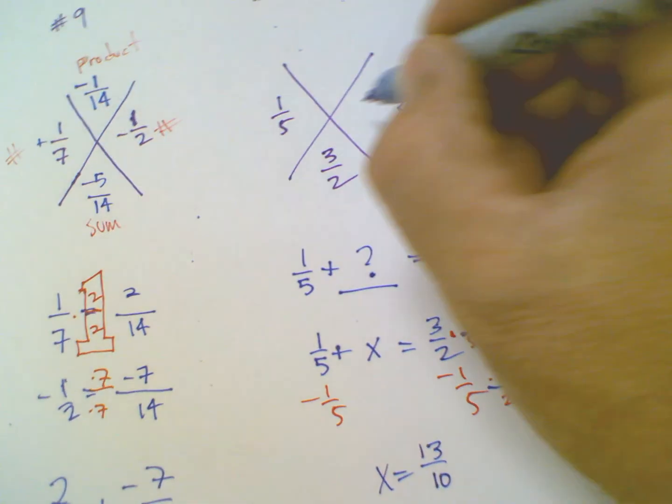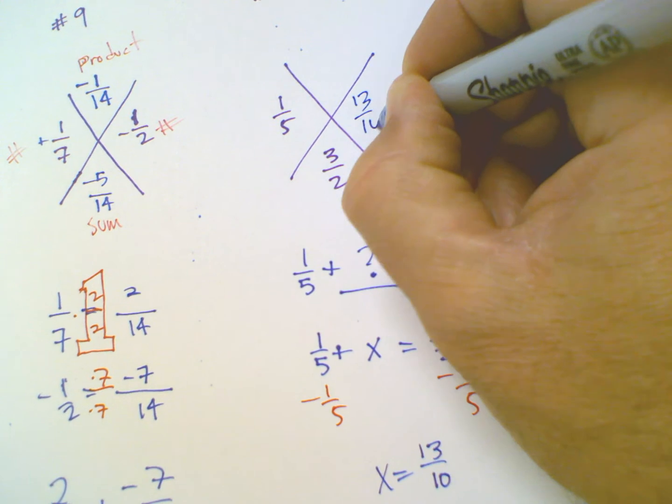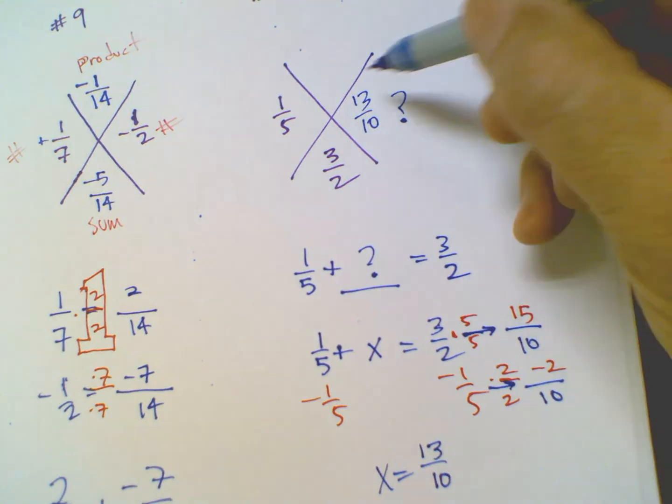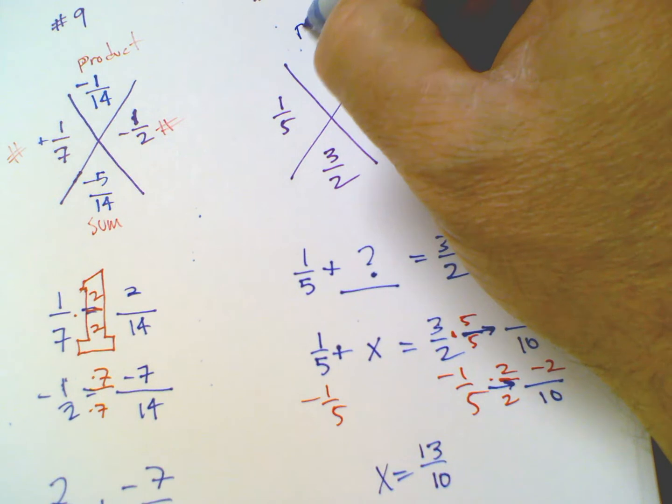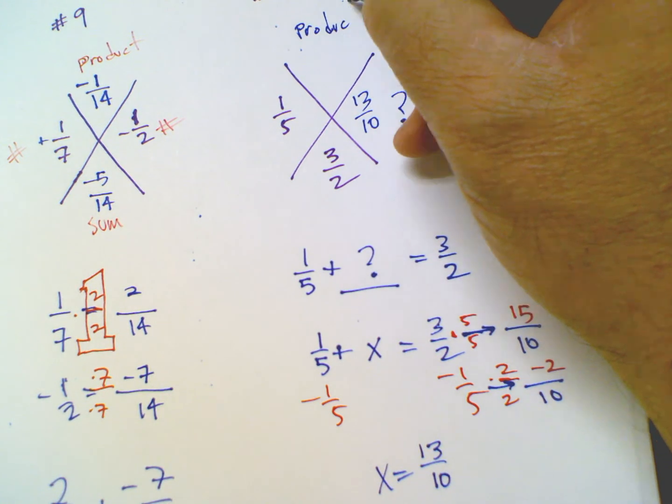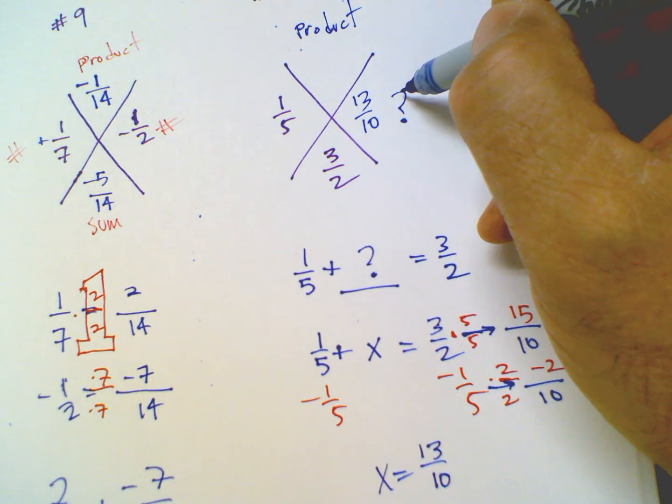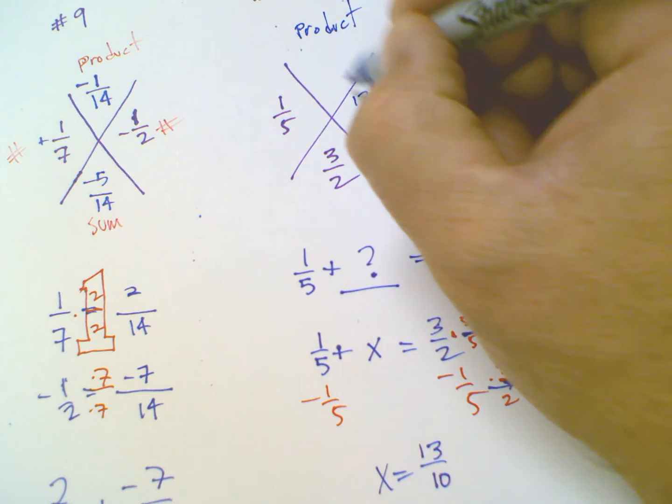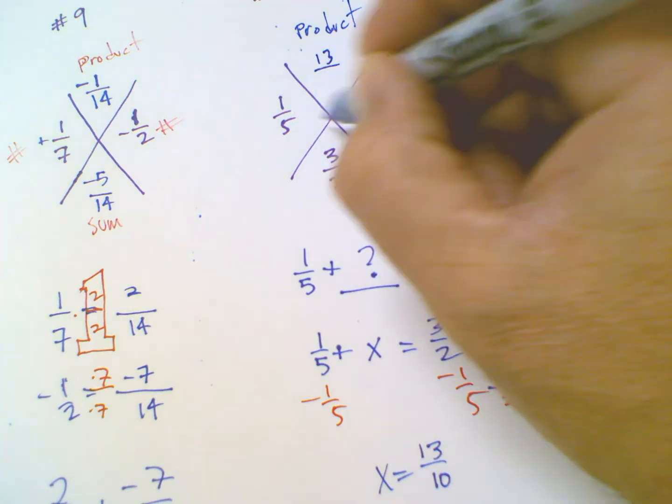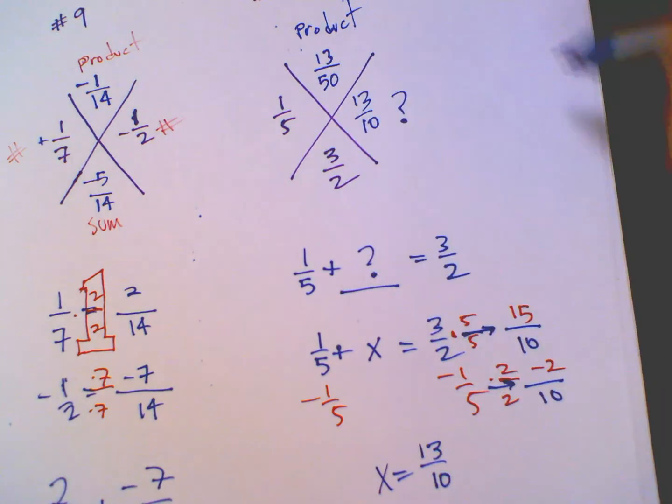So that is my unknown over here is 13/10. And then once I have that number on this side, remember the top is always the product. So multiply those two. Multiply straight across. 1 times 13, 13. 5 times 10, 50. So that's the two numbers that go into those.